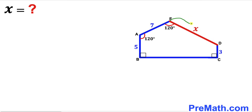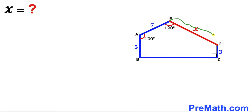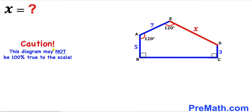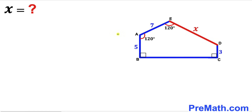Segment DE is represented by x, angle BAE is 120 degrees, angle AED is 120 degrees as well, and we also have 90 degree angles. Our task is to find the value of x, the side length DE. Please give a thumbs up and subscribe, and keep in mind the figure may not be 100% true to scale.